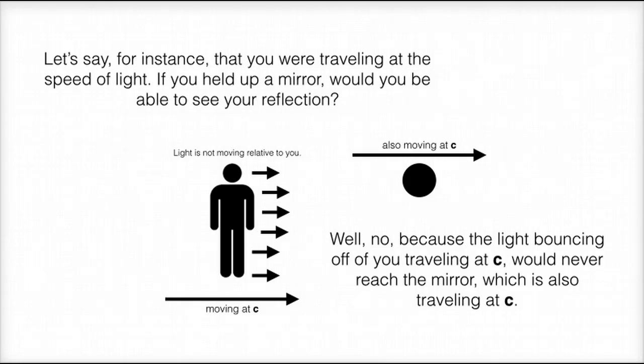Let's say for instance that you were traveling at the speed of light. If you held up a mirror, would you be able to see your reflection? Well, no, because the light bouncing off of you traveling at C would never reach the mirror, which is also traveling at C.